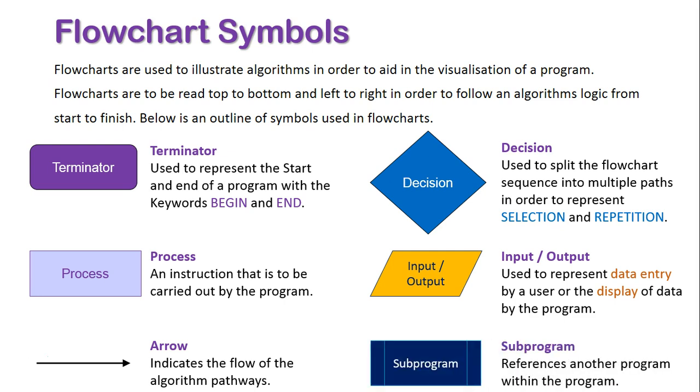And finally we have the subprogram. Subprogramming is similar to a process in that it's a rectangle, but we can also see within it it's got two extra lines. This is basically referencing another program within the program. So we highlight the subprogram without going into much detail of what the subprogram is doing. That may be its own flowchart, and it's drawn separately.